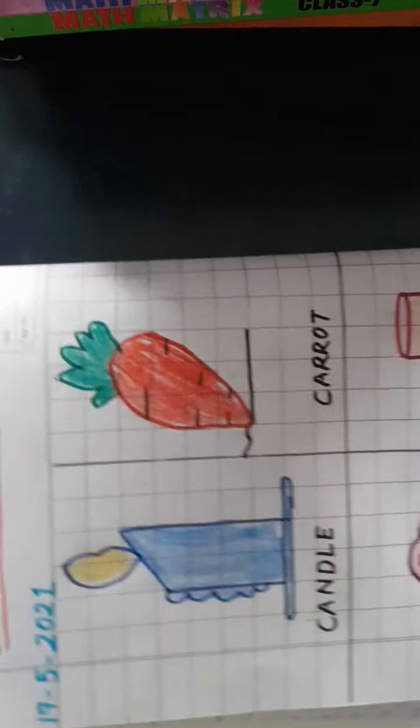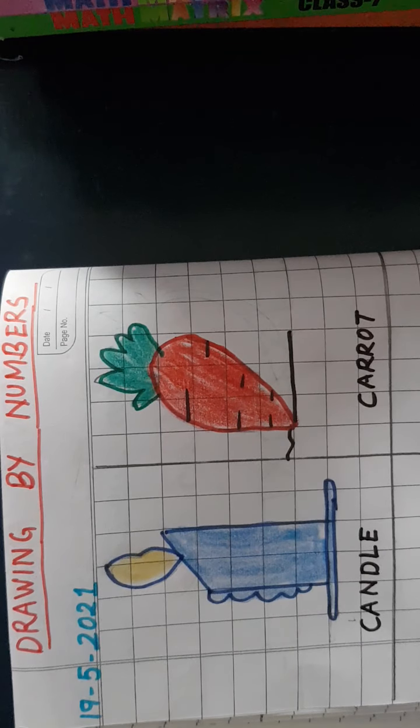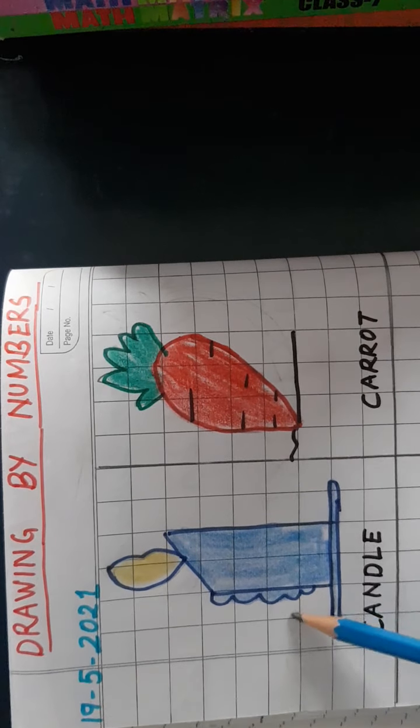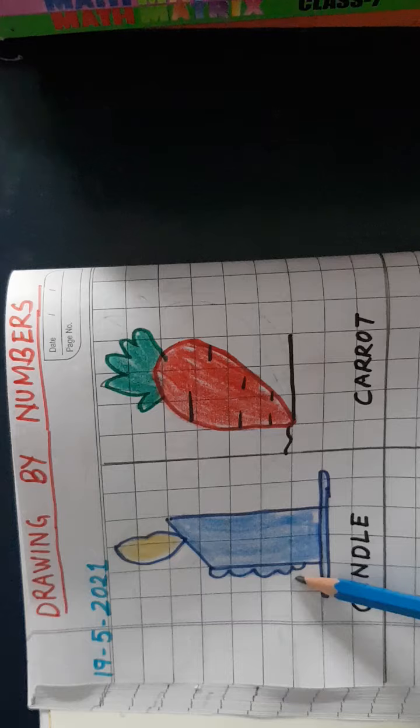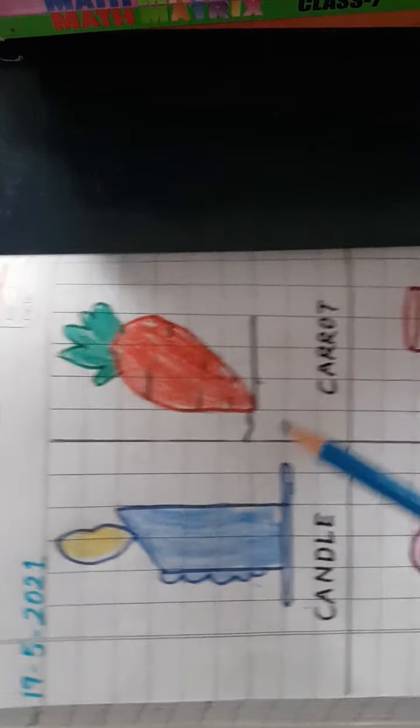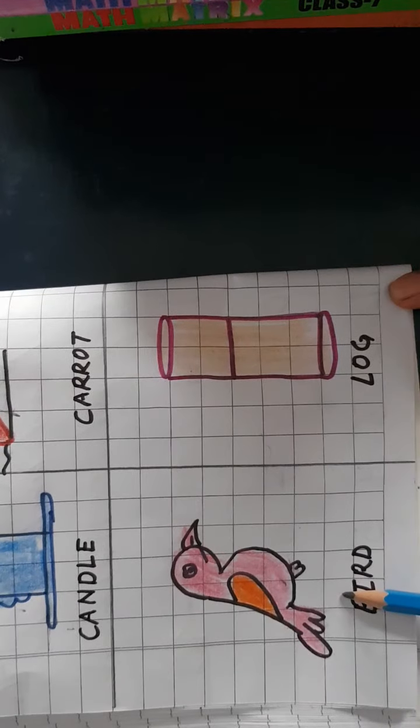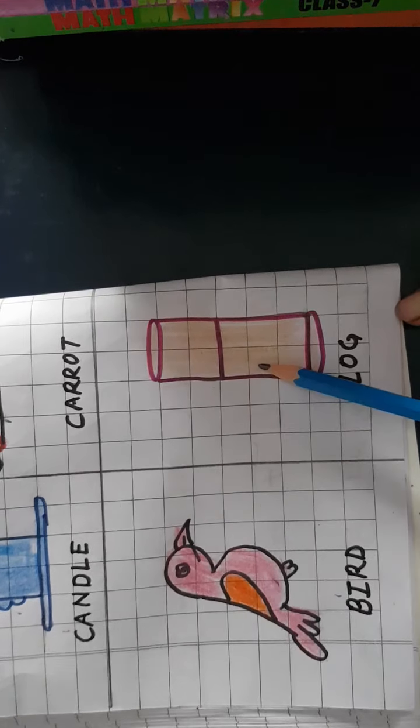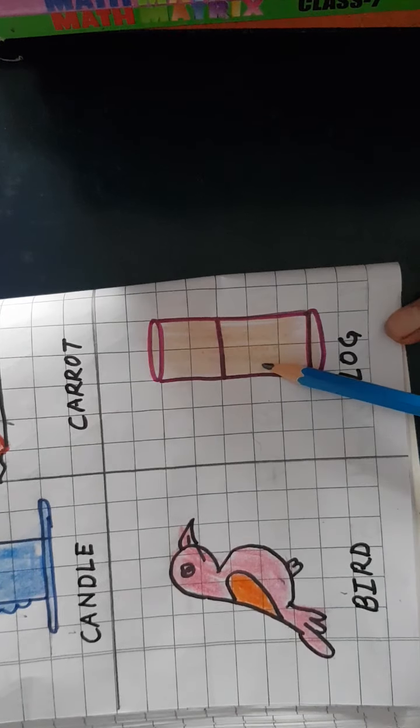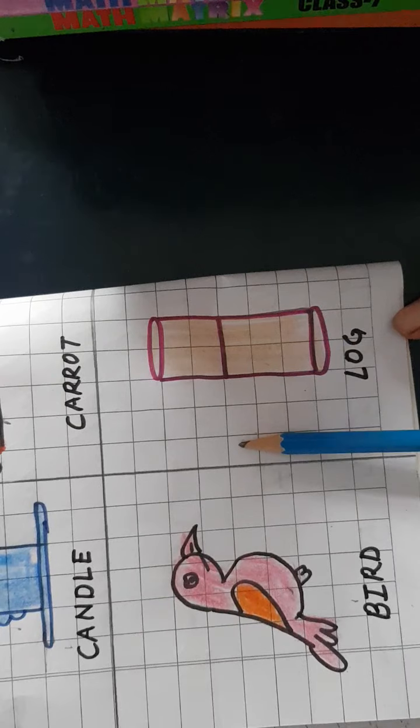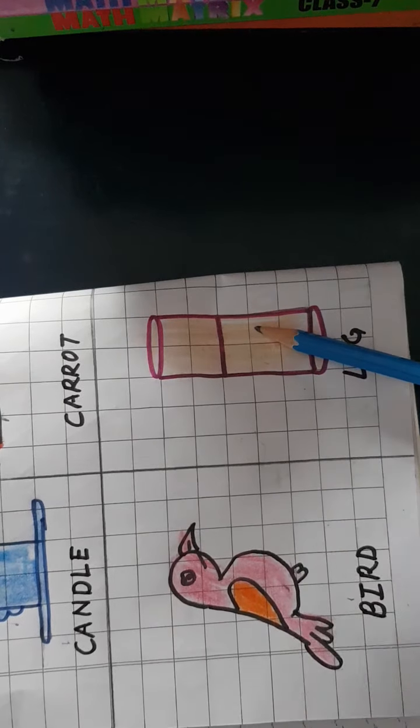So in today's lecture, what we have learnt? We have learnt how to draw the candle from number 1, carrot from number 2, a bird from number 3 and a log from number 4. So I hope that you like the video. Thank you and have a nice day. Bye bye.